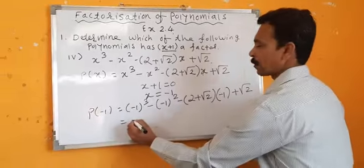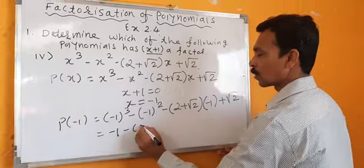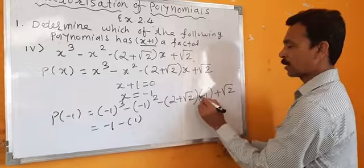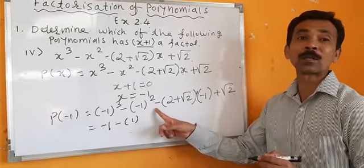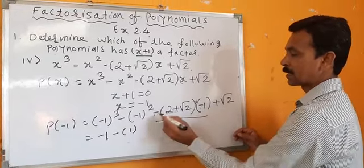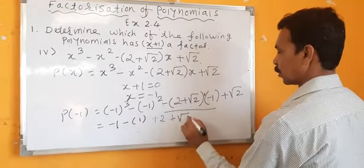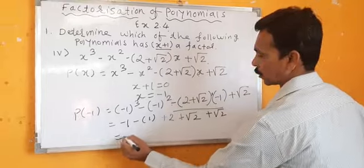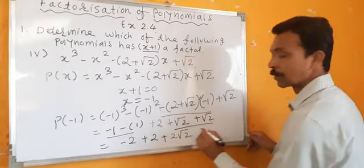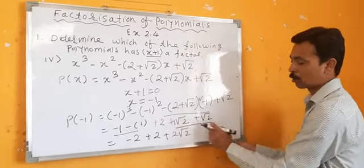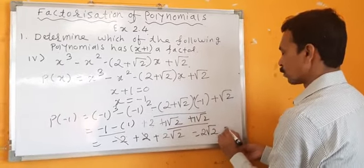Evaluating: minus 1 cubed is minus 1; minus 1 squared is plus 1, so that term becomes minus 1. Multiplying minus 1 through the bracket with root 2 gives minus root 2. We get: minus 1 minus 1 minus 2 plus root 2 plus root 2. Root 2 plus root 2 is 2 root 2. Minus 2 plus 2 cancels, leaving 2 root 2, which is not equal to 0.